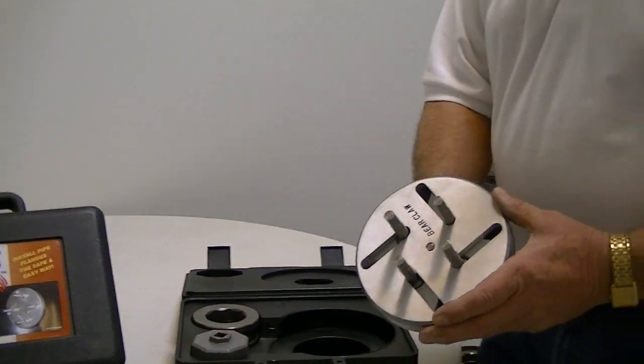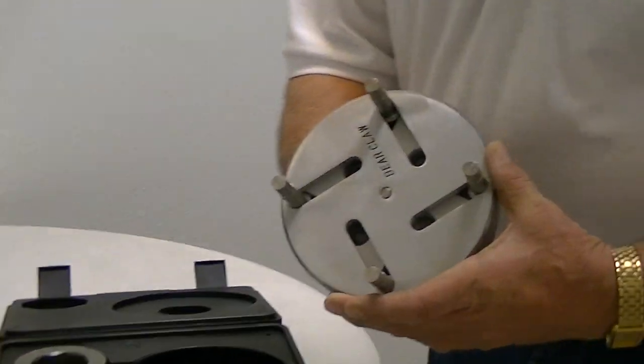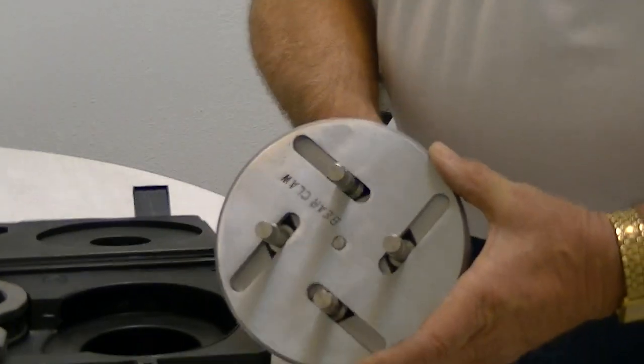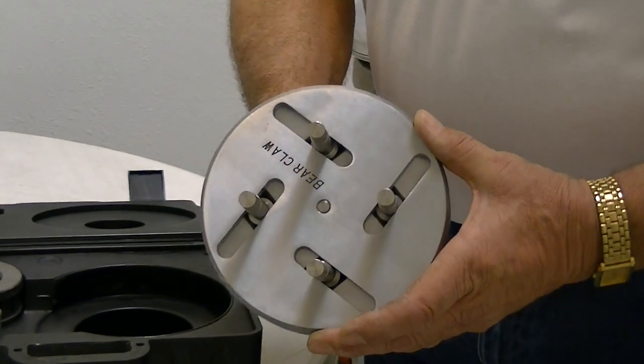This is the Bearclaw Wrench. It's an adjustable wrench for flanges, for half-inch pipe flanges, all the way out to a three-inch pipe flange.